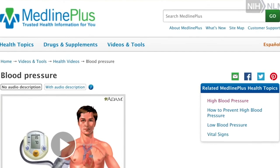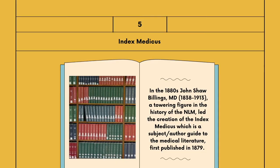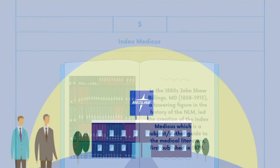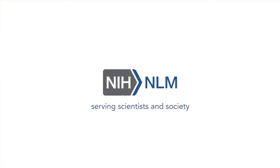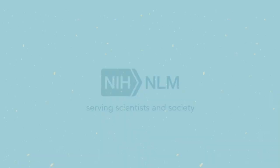In the 1880s, John Shaw Billings, a towering figure in the history of the NLM, led the creation of the Index Medicus, which is a subject or author guide to the medical literature first published in 1879. This was a formidable undertaking by human labor without computers. The Index Medicus continued through the development of Medline and subsequent databases and indexes. The National Library of Medicine also published the Cumulated Index Medicus and the Abridged Index Medicus from 1970 to 1997.